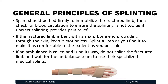Additional principles: the splint should be tied firmly to immobilize the fractured limb. Check for blood circulation to ensure the splinting is not too tight. Correct splinting provides pain relief. If the fractured limb is bent with a sharp bone end protruding through the skin, keep it motionless and splint the limb as you find it. Make the patient as comfortable as possible. If an ambulance is on the way, do not splint the fracture limb and wait for the ambulance team with specified medical equipment.